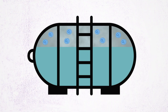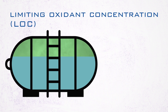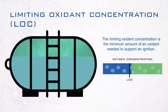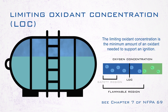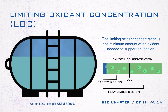If operating outside of the flammable region is not possible, the oxidizer can be reduced to create an inert environment. Limiting oxidant concentration (LOC) is the minimum amount of an oxidant needed to support an ignition. Knowing the LOC helps determine proper inerting and purging procedures to maintain safety while remaining inside the flammable region. Chapter 7 of NFPA 69 advises the permissible safety margin necessary when operating below the LOC.